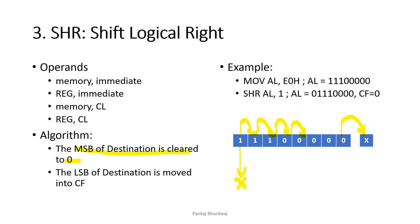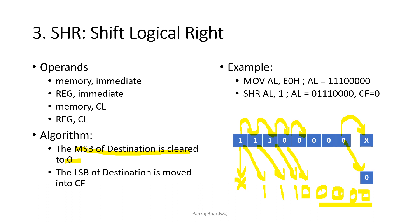Each bit is shifted to the right, and the MSB will be cleared to 0. The LSB goes into the carry flag. For example with AL = E0, after SHR, the MSB becomes 0, giving us 0,1,1,1,0,0,0,0 — that is 70 — and the carry flag gets the LSB 0 from the previous register data.